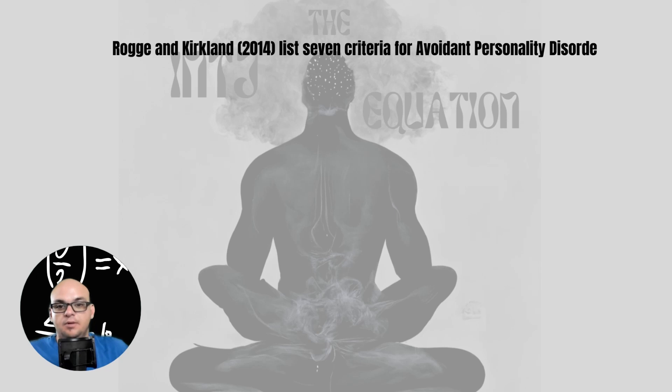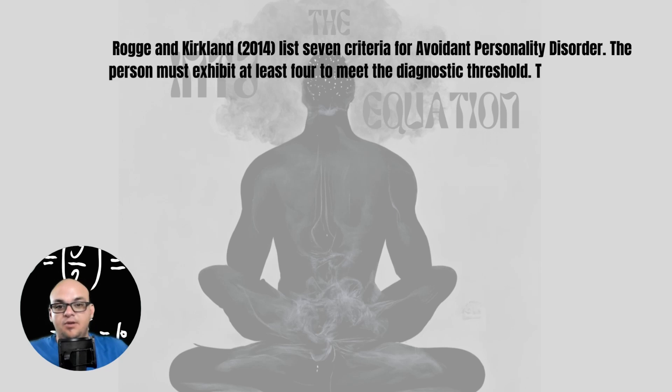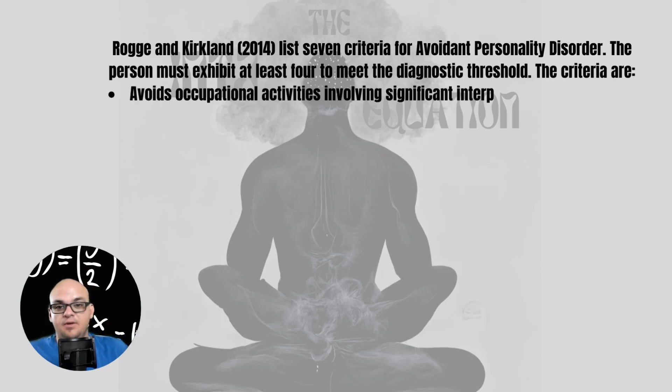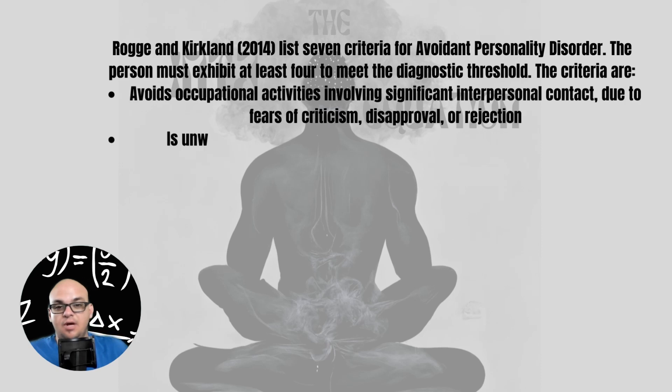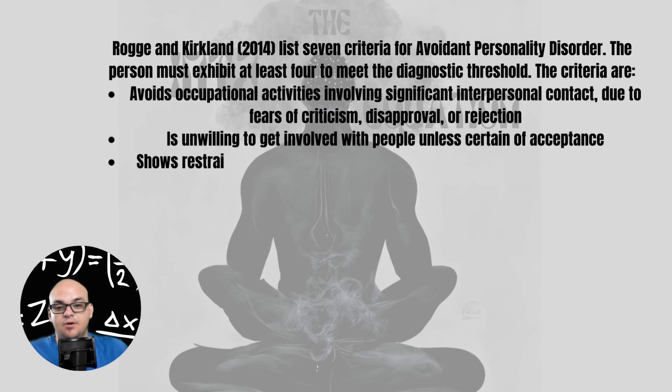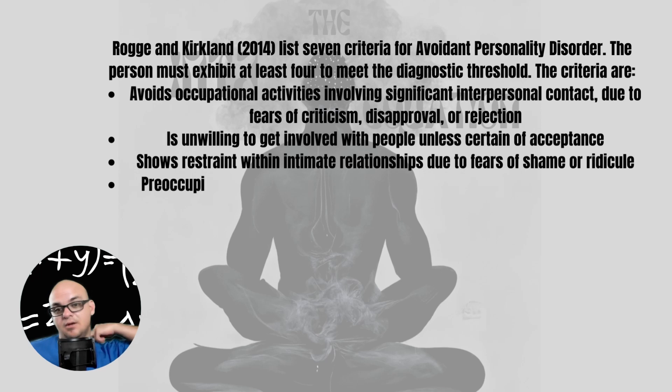So, what is avoidant personality disorder? To sum things up, it is one of the 10 personality disorders listed in the DSM-5. It's a cluster C personality disorder, and like other cluster C personality disorders, it's derived from fear and anxiety.